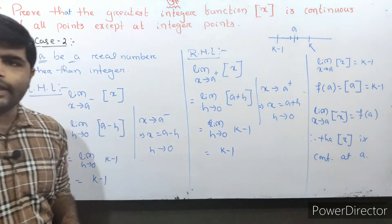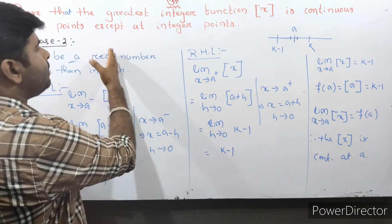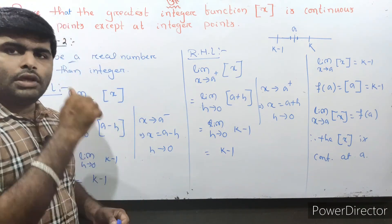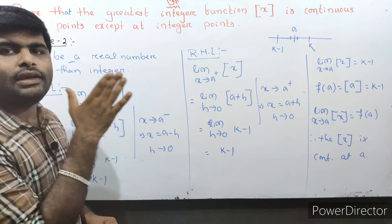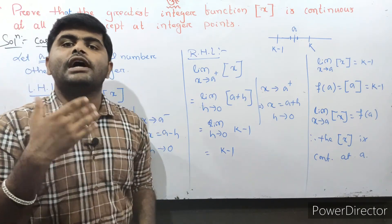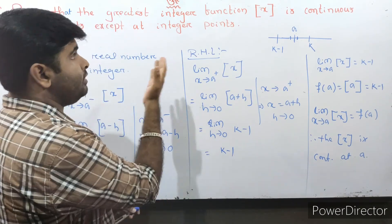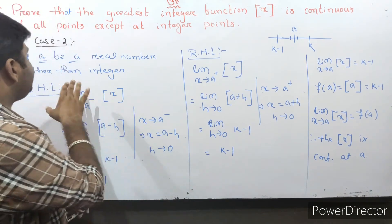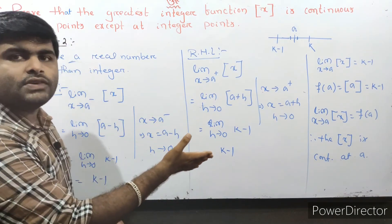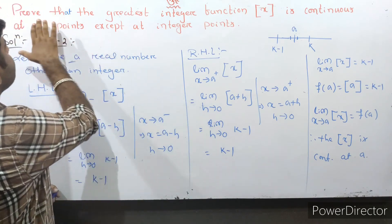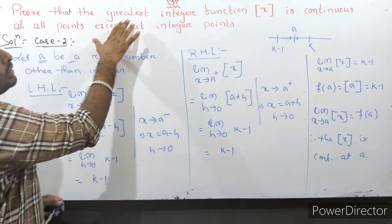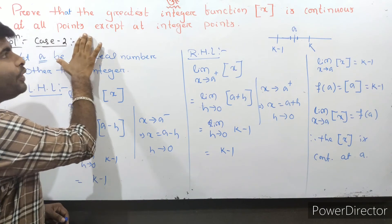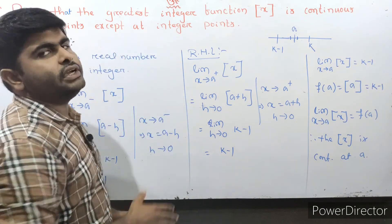Here a is a real number except an integer. Therefore the greatest integer function is continuous at all real points except at integer points. This completes the proof.